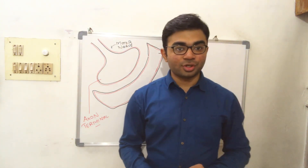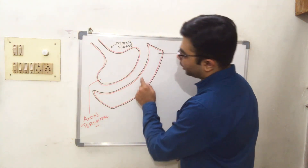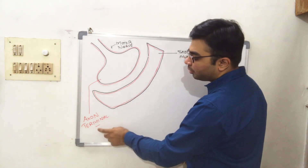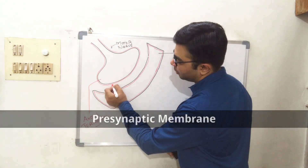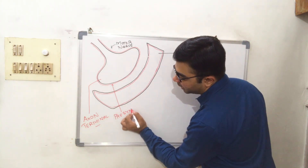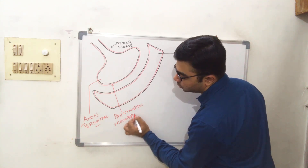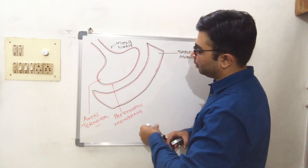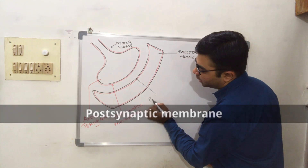Now let us see the internal portion of this neuromuscular junction. The membrane of the motor nerve — the motor axonal terminal — is termed as the presynaptic membrane. The membrane over the muscle fiber is termed as the postsynaptic membrane.